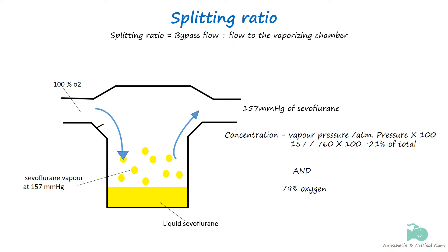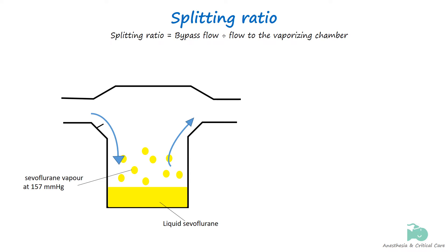This is way too much to use in practice. To lower its concentration, we need to split the fresh gas flow and only allow a proportion to go into the vaporizing chamber by making some gas bypass it.